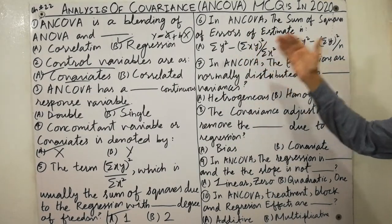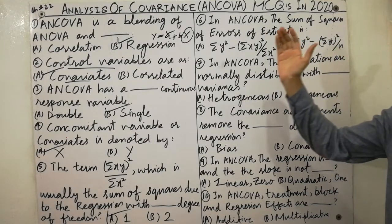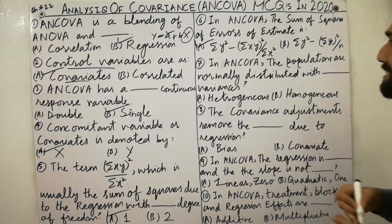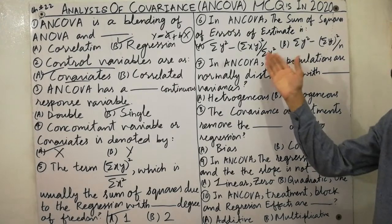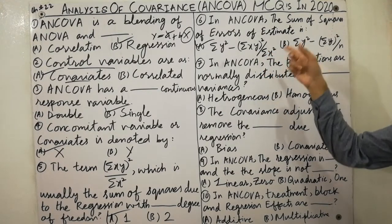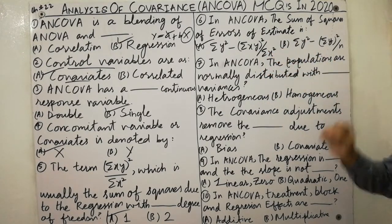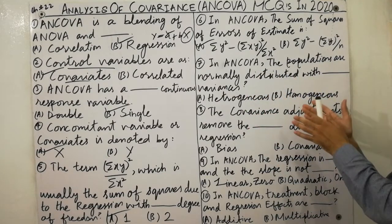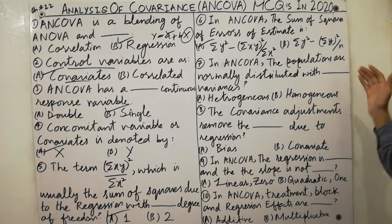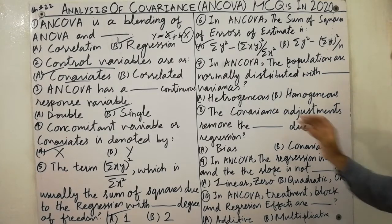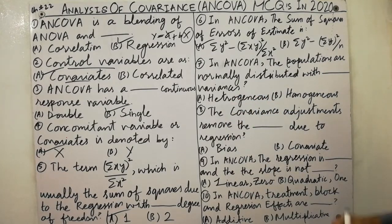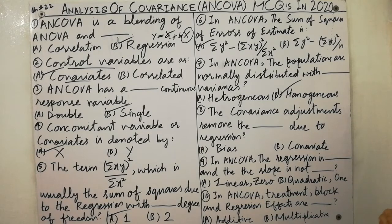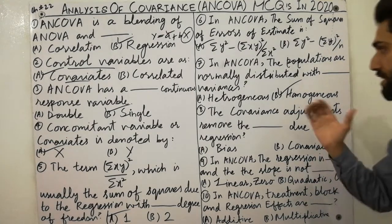In ANCOVA, the sum of squares of error of estimate is ΣY² minus (ΣXY)² / ΣX². In ANCOVA, the populations are normally distributed with homogenous variances — you must remember that: always homogenous variances.